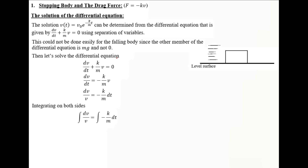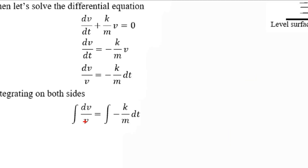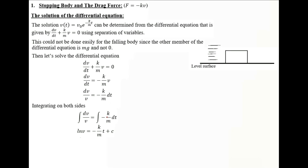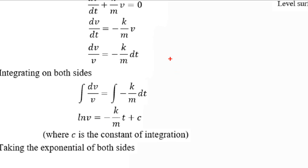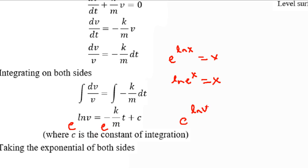Now we integrate both sides. The integral of 1/V with respect to V is ln V, and the integral of a constant gives a linear term plus a constant of integration C. We are interested in V, not ln V. We can eliminate the logarithm by taking the exponential of both sides, using the identity that e to the ln(x) equals x. So we write e to the ln V equals e to the power of minus K over M times T plus C.